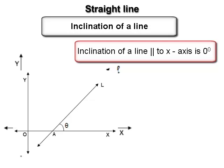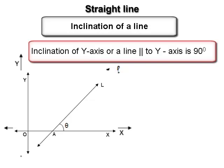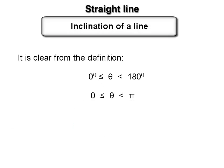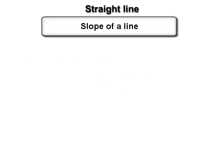The inclination of the x-axis or a line parallel to the x-axis is 0 degrees. The inclination of the y-axis or a line parallel to the y-axis is 90 degrees, that is π/2 radians. From the above definition it is clear that if θ is the inclination of a line, then 0° ≤ θ < 180°, that is 0 ≤ θ < π.